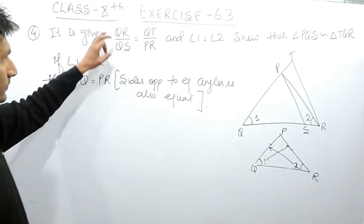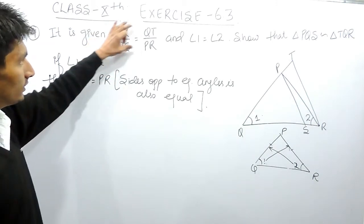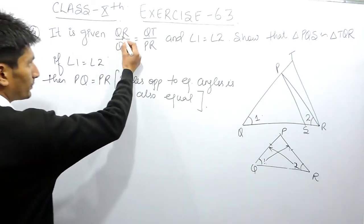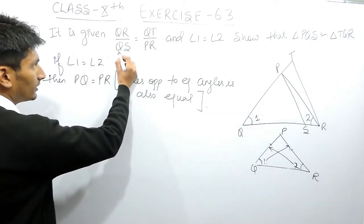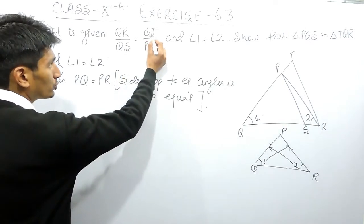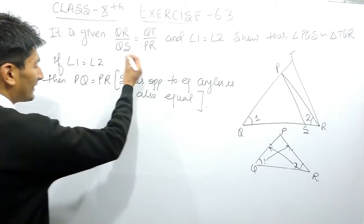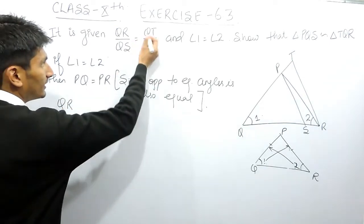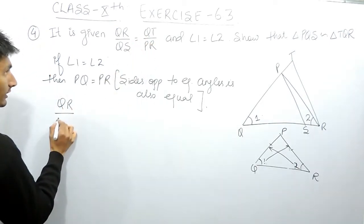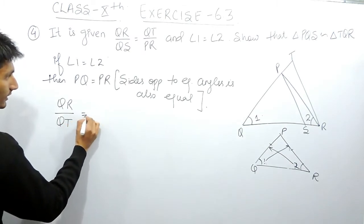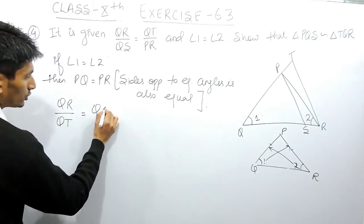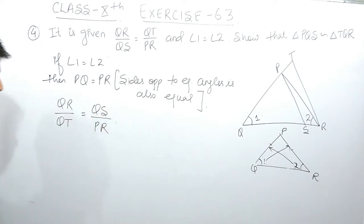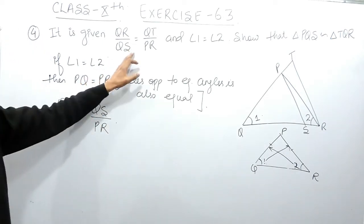Now, these two ratios are given: QR/QS is equal to QT/QP. I can rewrite this — replacing PR with PQ — as QR/QT = QS/PR. So I have rewritten this expression in this form.